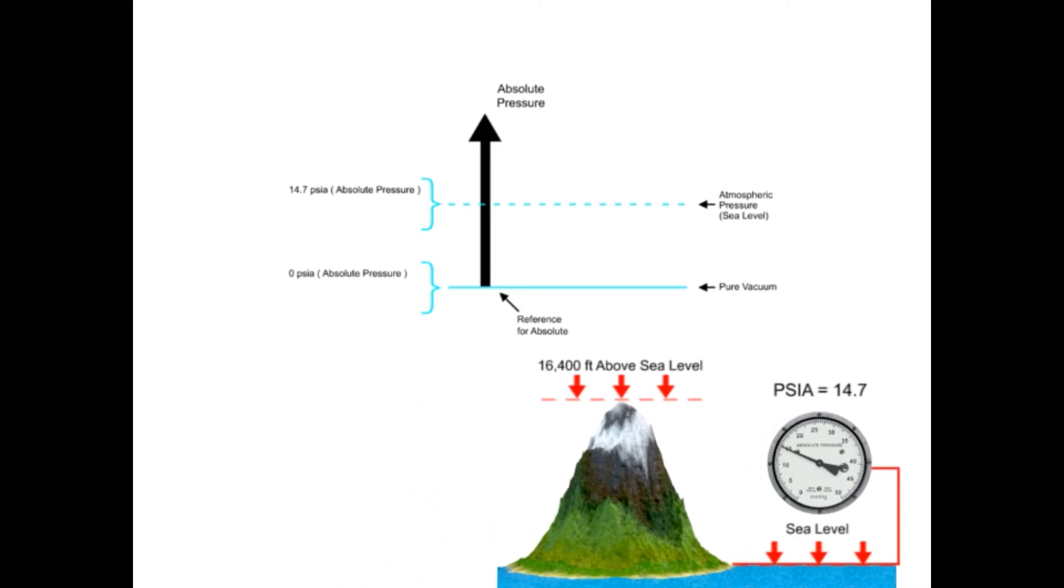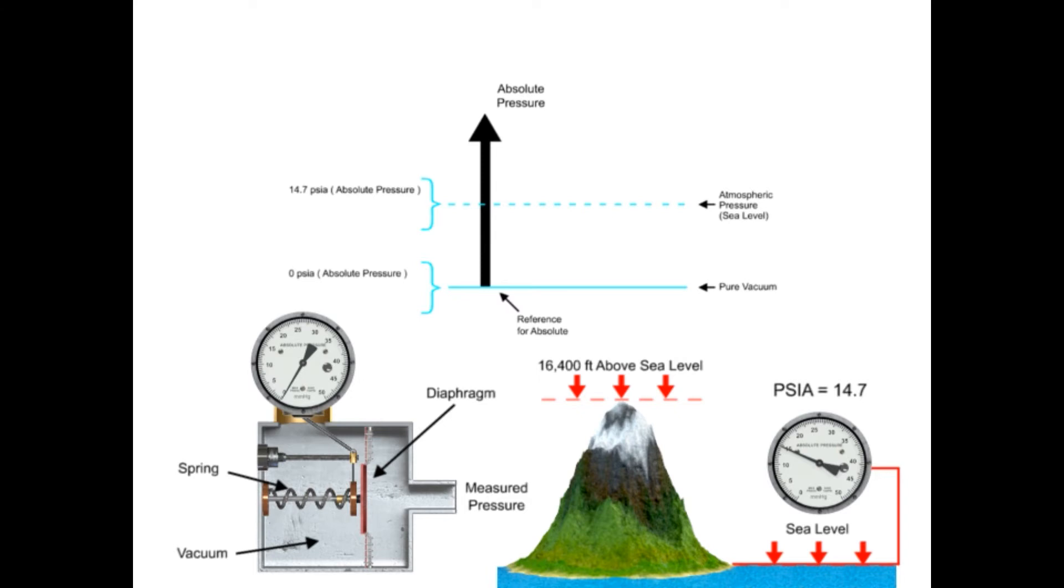A common method to measure absolute pressure is a mechanical diaphragm gauge. The diaphragm is a flexible membrane that flexes when exposed to pressure. On the opposing side of the diaphragm is the reference pressure, which is vacuum for absolute pressure. As the diaphragm element bends towards the side with the lowest pressure, it pushes on a spring that is mechanically linked to the gauge pointer and indicates the pressure value.